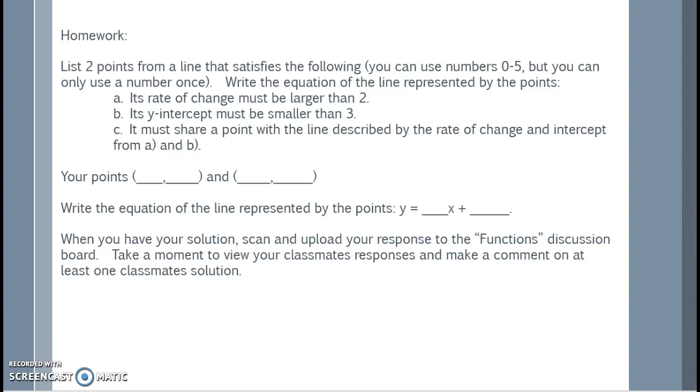And it must share a point with the line described by the rate of change and intercept from a and b. List your points here, again, using the numbers only 0 through 5. Finally, write the equation of the line represented by those points. When you have your solution, scan and upload your response to the function's discussion board.